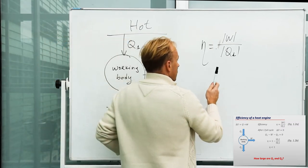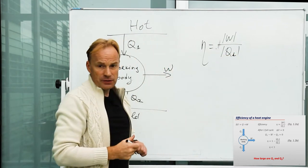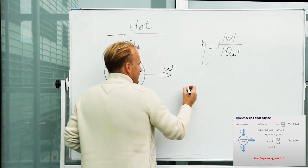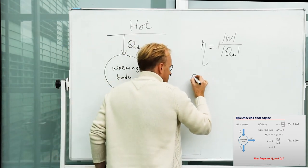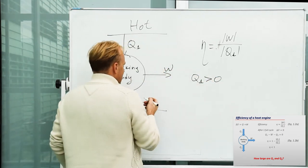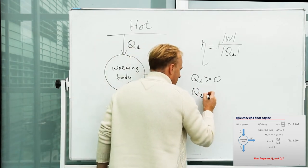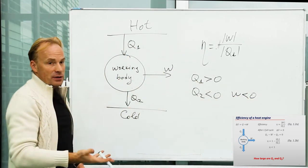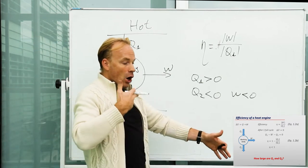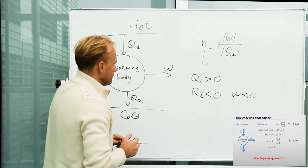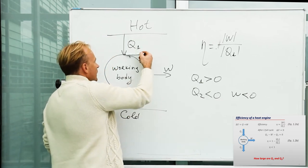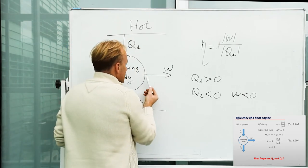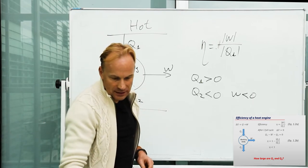If you think about the efficiency that a heat agent can achieve, it would be defined as the ratio of the absolute value of work divided by the absolute value of heat transferred to the working body. One important thing: I put absolute values to avoid confusion with signs. We agree that if heat is transferred to the system it is positive, and if heat is rejected by the system it is negative. If work is performed by the system it is negative, and if work is performed on the system it is positive. So in each case, an arrow toward the working body means a positive quantity, and an arrow away from the working body means a negative quantity.